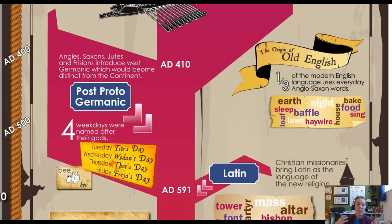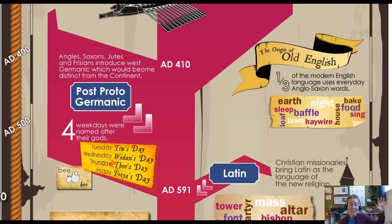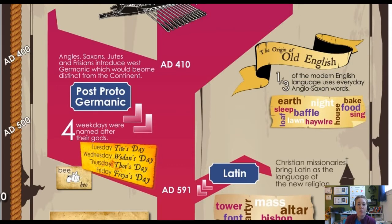This is the point in history where we see Old English develop — the very first baby version of English. About one third of our modern English has Anglo-Saxon roots. Words such as baffle, earth, and loaf are rooted back to this time hundreds of years ago. In prior lectures I mentioned that out of the top 1,000 words we use in English most were native — that's because they have Germanic roots tied back to this Anglo-Saxon time period.